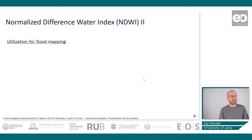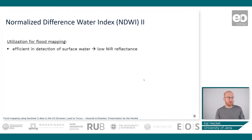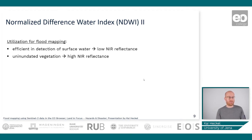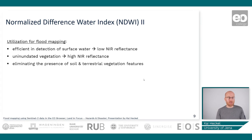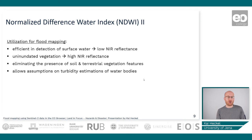Now let's see how the NDWI can be used for flood mapping and what its limitations are. This index is efficient for detection of surface water due to the low near infrared reflectance of water. Uninundated vegetation shows high near infrared reflectance, which gives a nice contrast. It also eliminates the presence of soil and terrestrial vegetation features, and allows assumptions on the turbidity state of water bodies.